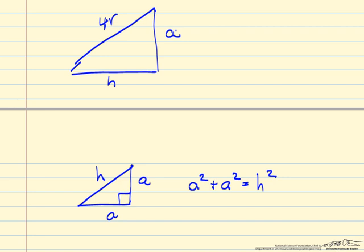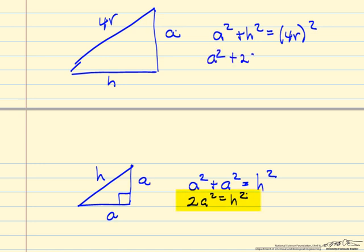A squared plus A squared is H squared, so 2A squared equals H squared. And then I can write correspondingly, A squared plus H squared is equal to 4R squared, A squared. H squared is 2A squared, and that is 16R squared.